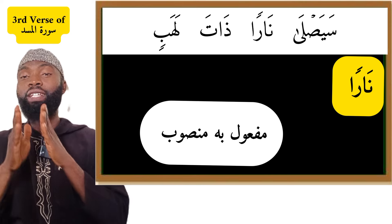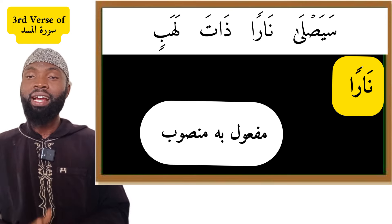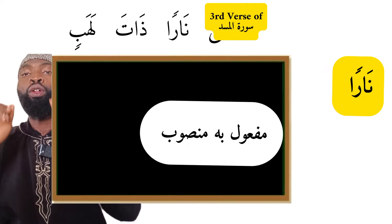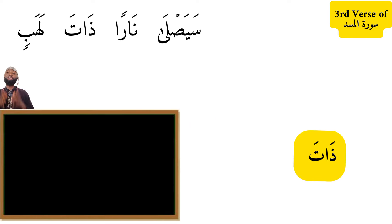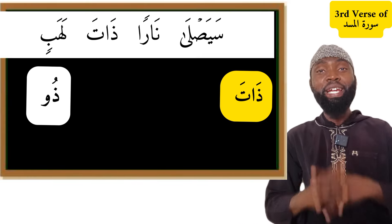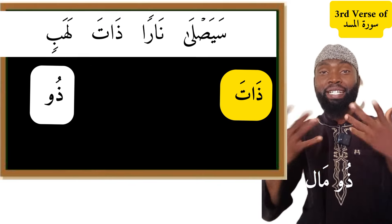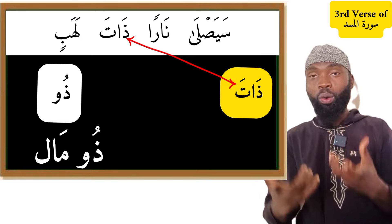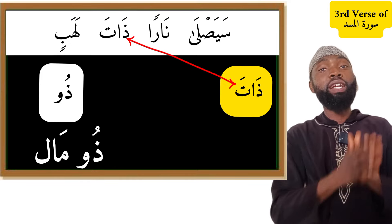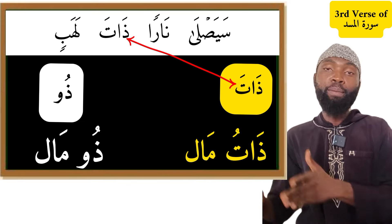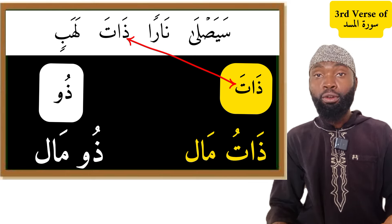The sign of its accusativeness is that it carries fatha. So 'sayasla naaron' — he will burn in the fire or he will be thrown into it. Coming to the next word 'dhata': it is originally 'dhatun' and is the feminine form of 'sahib', which simply means possessor. You can say 'dhu malin' — possessor of wealth — for a male, and 'dhata malin' for a female.